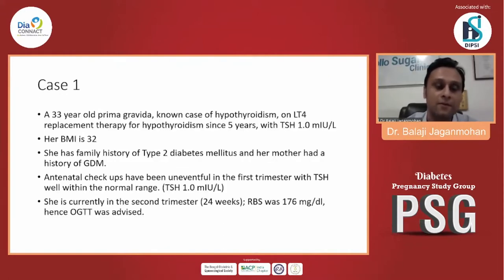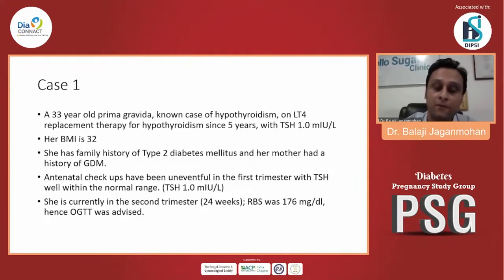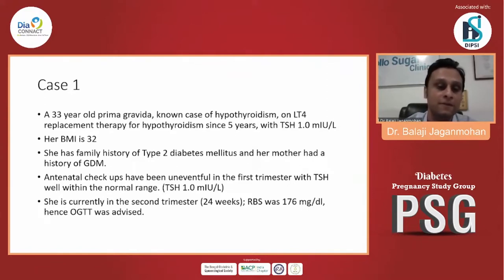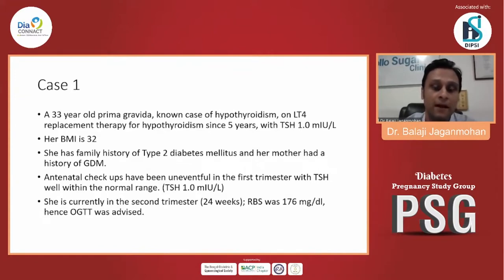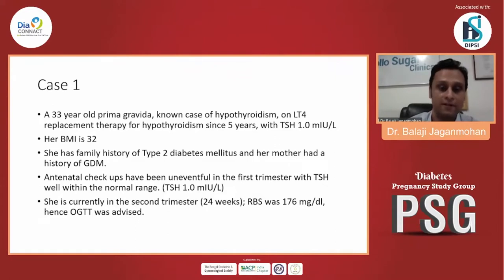This is the first case. We have a 33-year-old primigravida. She's a known case of hypothyroidism, already taking levothyroxine replacement therapy for the last five years, and currently her TSH is around 1. Her BMI is 32, and she has a positive family history of type 2 diabetes. In fact, her mother had a history of gestational diabetes. The antenatal checkups thus far have been uneventful in the first trimester — the TSH was around 1. And in the second trimester at 24 weeks, a random blood sugar revealed around 176, so she was advised an OGTT at this point.